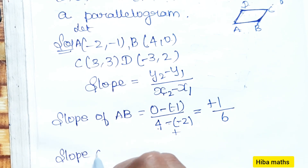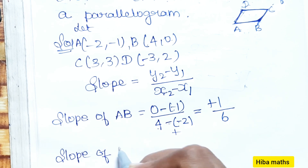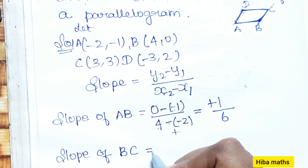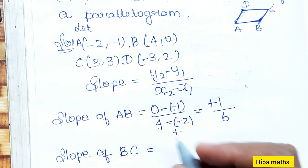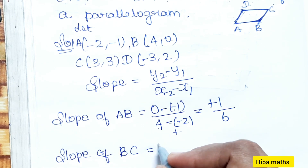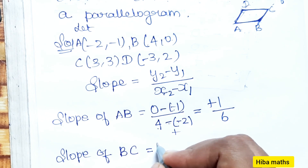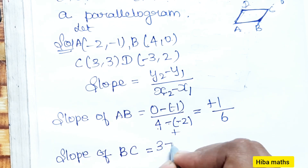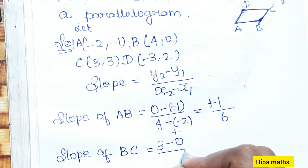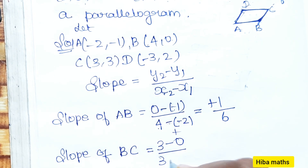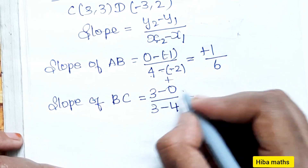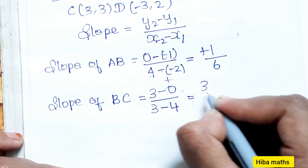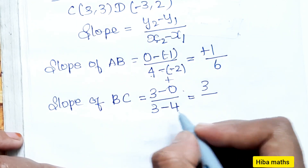Next, slope of BC: B is (4, 0), C is (3, 3). y2 - y1 = 3 - 0 = 3, x2 - x1 = 3 - 4 = -1. So slope of BC = 3 / (-1) = -3.